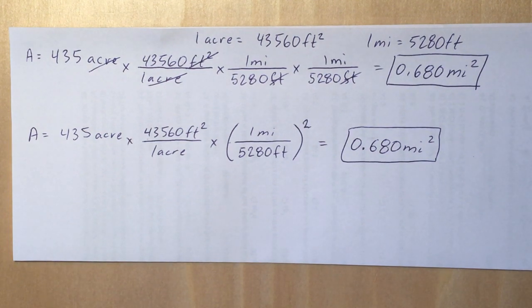So we have 435 acres to start out with, and we've got the conversion factors from acres to square feet and miles to feet up there. So it seems straightforward, like I said, cancel out acres with acres to get square footage.